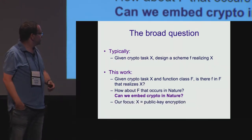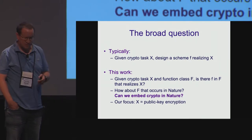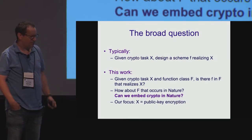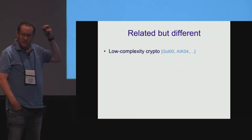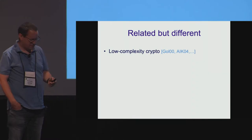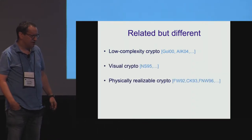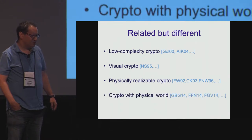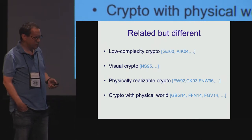Our focus is on the primitive that we want to build being public encryption. There are quite a few relevant lines of work, including works on low-complexity cryptography, visual cryptography, different forms of physically-realizable cryptography, or different interactions of crypto with the physical world, and crypto about the physical world.